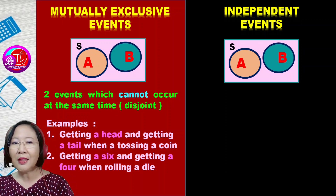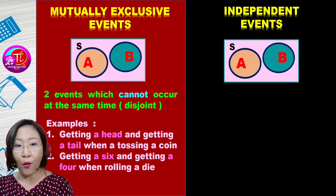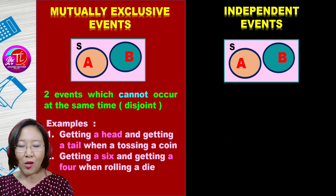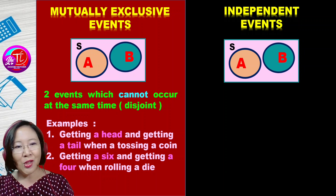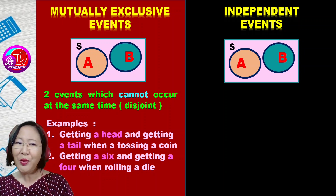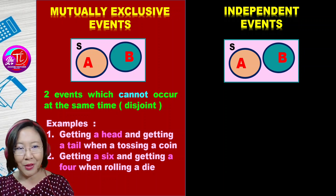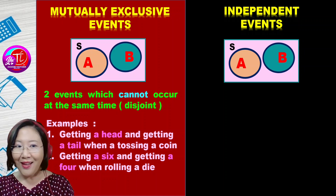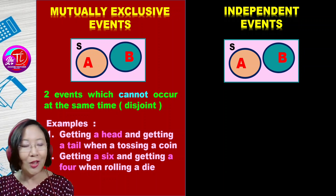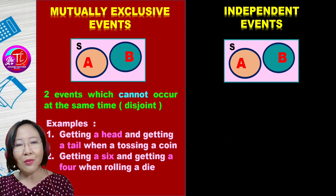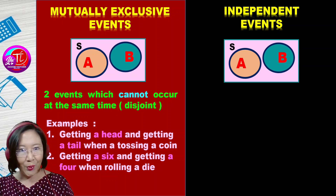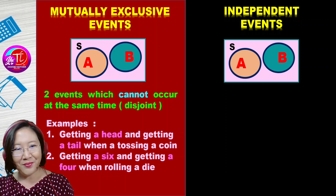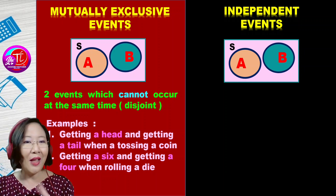Secondly, maybe getting a six and getting a four when you toss a die. A die has six numbers on each face, so you have a count of one until six. When you toss a die, you can get only one number. For example, if you get a six, you will never see a four on that die on that only toss. So in this situation, you call it a mutually exclusive event, which means two events could not happen together.